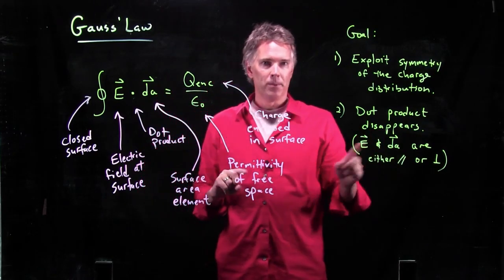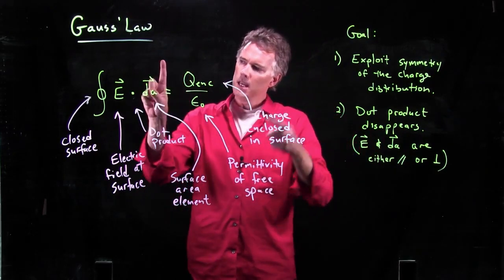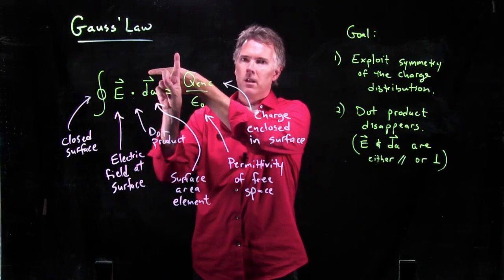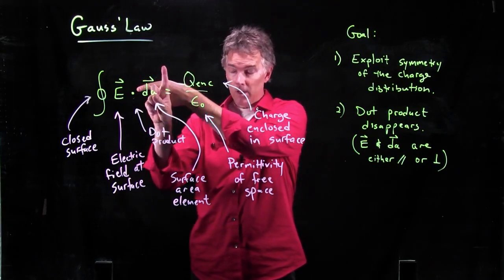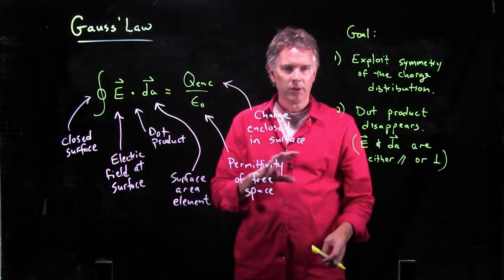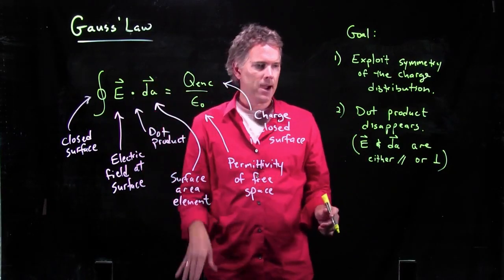Or, if they are perpendicular to each other, then E dotted with dA, we get a cosine of 90 degrees, and that term would be zero. So, either way, it's going to simplify our math.